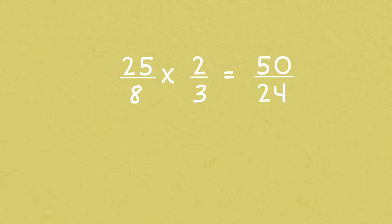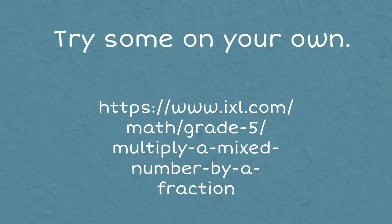We will now turn that improper fraction into a mixed number by dividing fifty by twenty-four. And that will give us two and two-twenty-fourths, which is our mixed number. Now it's your turn to try some on your own. Go to the web address or click on the link below the video. Thanks for watching!